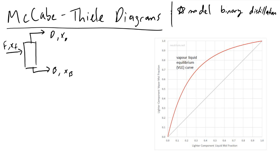We have a component A and a component B, and our job is to concentrate the more volatile component into our distillate and recover our less volatile component in our bottoms stream. From a high level, if we draw a black box around a distillation column, we have a feed going into some tray, a distillate with flow rate D out the top, and a bottoms stream B. Each stream has some composition, and we'll focus on the more volatile component.